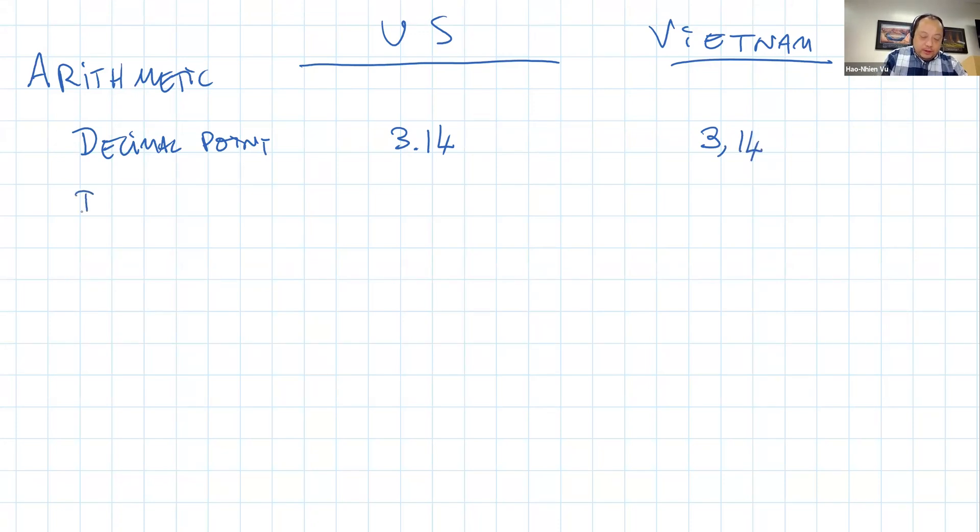The symbol for division. In the US, 6 divided by 2 equals 3. In Vietnam, it's 6 divide using a colon as the symbol for divide, so 6:2 = 3.